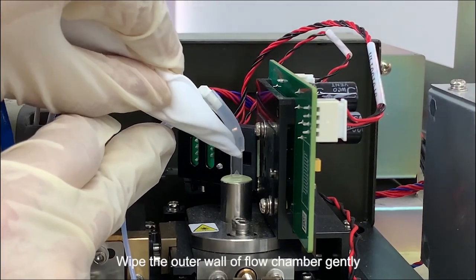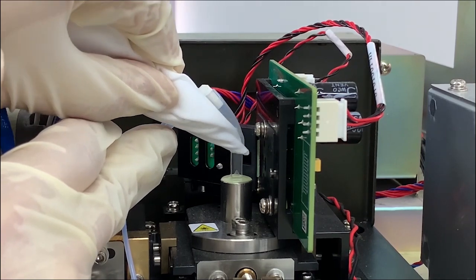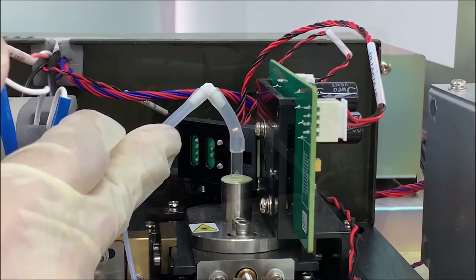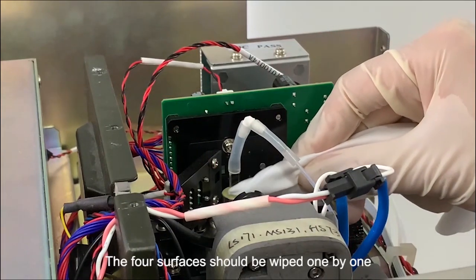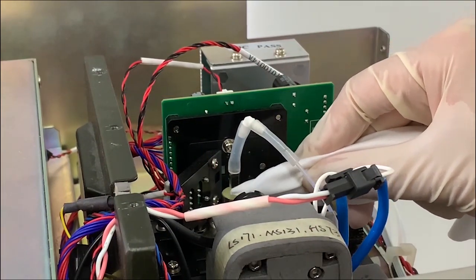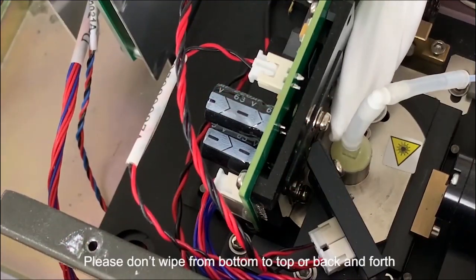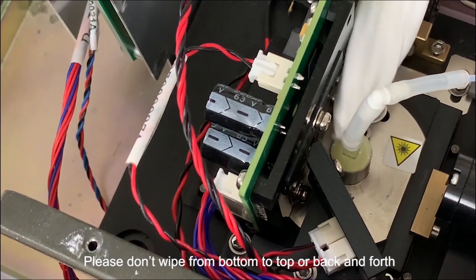Wipe the outer wall of the flow chamber gently. The four surfaces of the flow chamber should be wiped one by one. Wiping order must always be from top to bottom. Please don't wipe from bottom to top or back and forth.